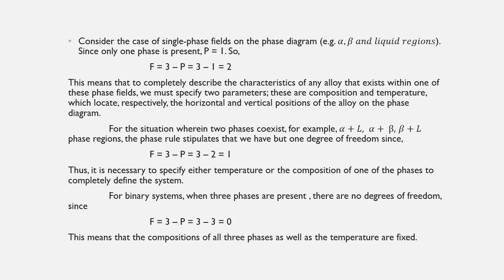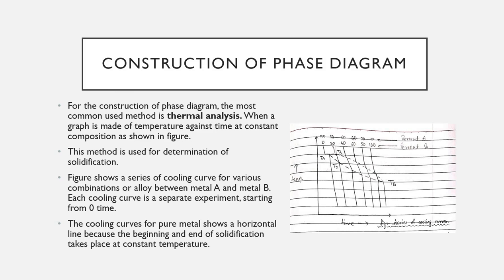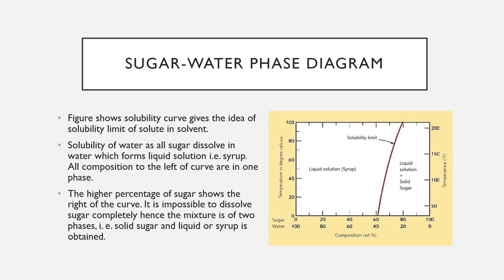Construction of phase diagrams: the most commonly used method is thermal analysis, where a graph of temperature against time at constant composition is made. This method is used for determination of solidification; the resulting cooling curve shows a change in slope. A series of cooling curves for various alloy compositions between metal A and metal B are produced. Cooling curves for pure metals show a horizontal line because solidification takes place at a constant temperature.